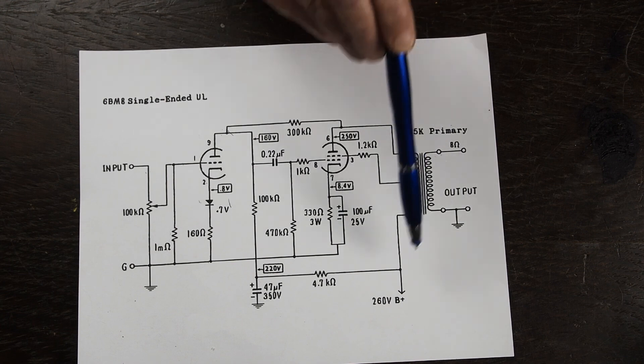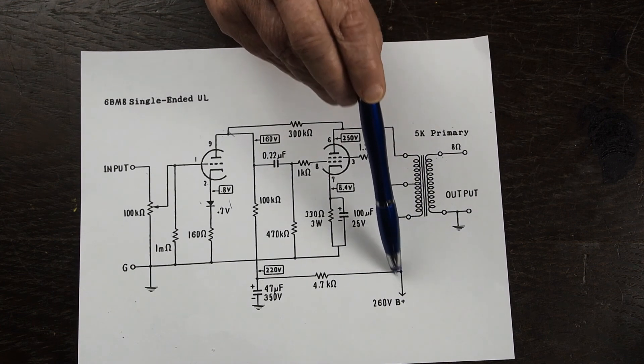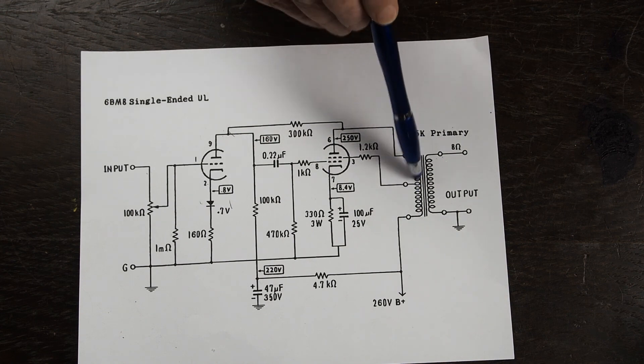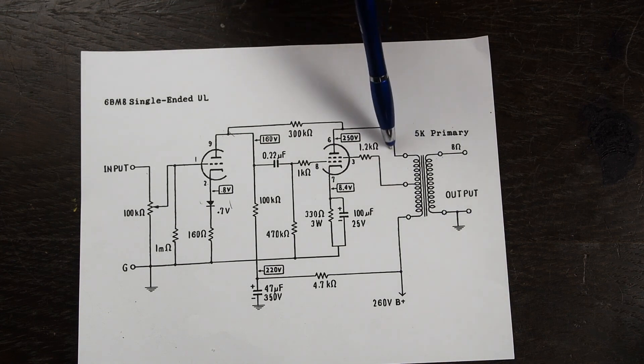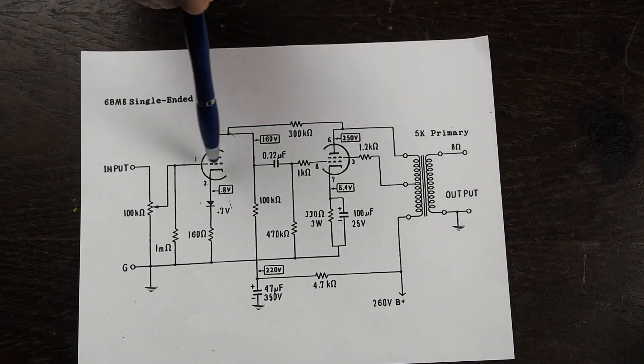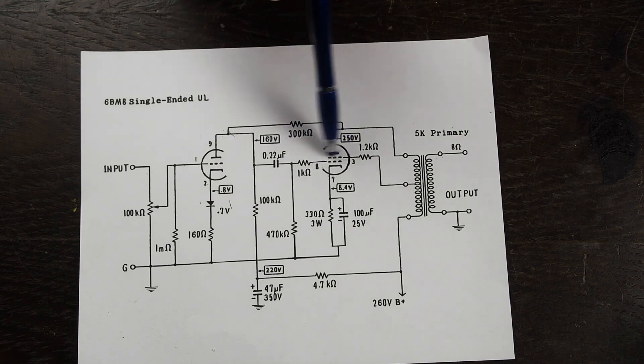On this side the B plus goes through the primary of this output transformer and comes out on this side where we have 250 volts on the plate of this tube which is the driver tube. Just like on this tube when the voltage on this grid changes it varies the current across from the plate to the cathode on this tube.